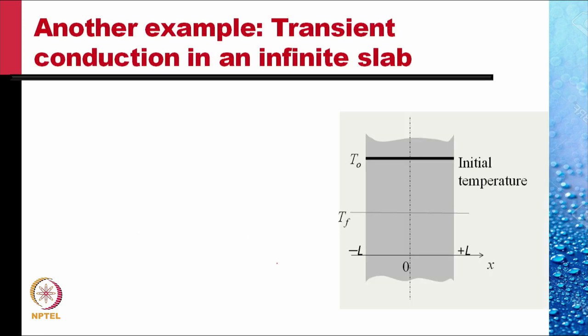Let us do another example from heat transfer: the problem of transient conduction in an infinite slab. Consider an infinite slab of thickness 2L with coordinate system set up so that the left face is at x = −L and the right face at x = +L. Let T₀ be the initial temperature at t = 0. The slab is immersed in a fluid at temperature Tf, with convective heat transfer coefficient h, slab conductivity k, density ρ, and specific heat Cp.